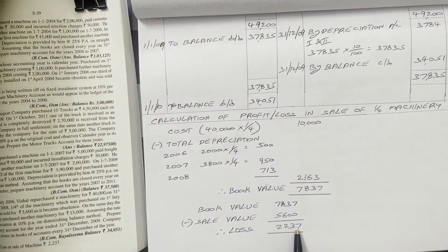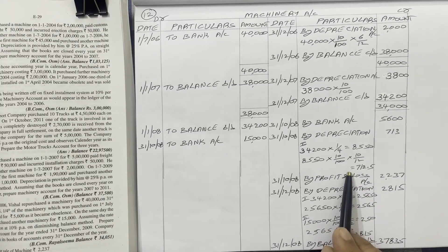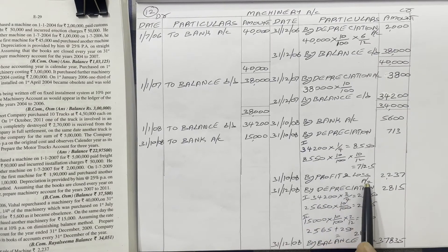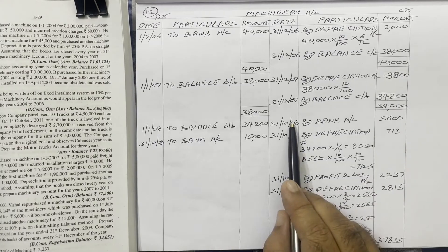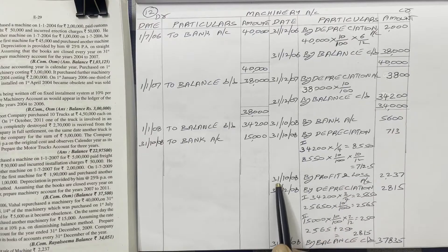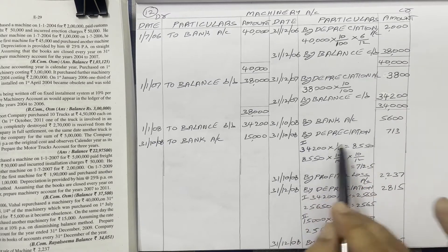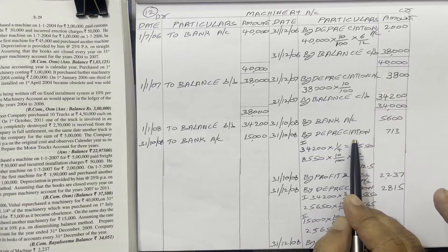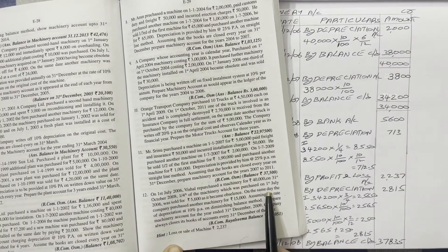This loss amount we should show in the machinery account. Since it is a loss, on the credit side write 'By Profit and Loss Account' — because this loss is transferred to the profit and loss account. The date is the same as the sale date, 31st October 2008, and the loss is 2,237. All entries related to the sold asset are now completed.